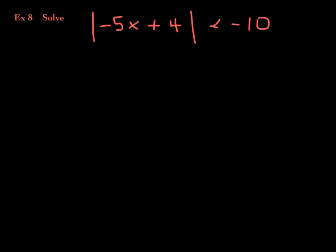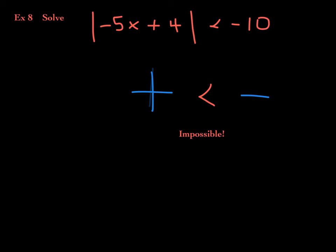Example 8: the absolute value of negative 5x plus 4 is less than negative 10. The left-hand side is an absolute value expression, which is always positive. The right-hand side is negative 10. When will something positive ever be less than something negative? Never — it's impossible. So the final answer is no solution.